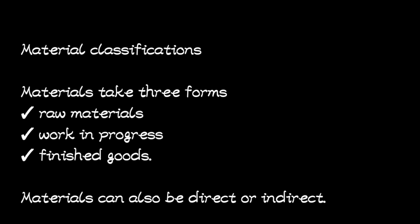Let's look at material classifications. Materials take three forms: raw materials, which are those bought from outside; work in progress, which are materials currently being worked on; and finished goods, which is the output.